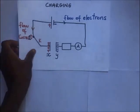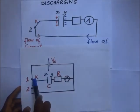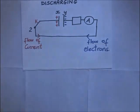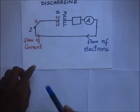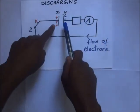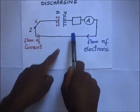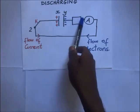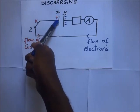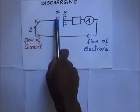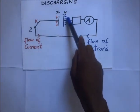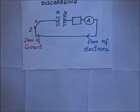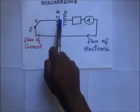Now let's explain the discharging process. We connect switch K to terminal two. There is no source of EMF in this part of the circuit — we just have two charged plates connected to a resistor. Electrons flow from plate Y to neutralize plate X. The potential difference across the capacitor, which is initially very high, decreases as electrons flow, and as the PD decreases the capacitor loses its stored energy.